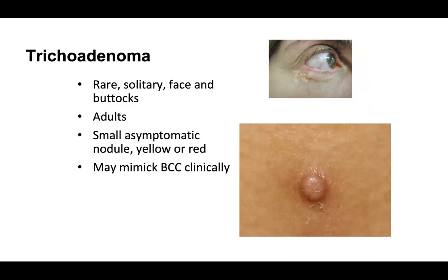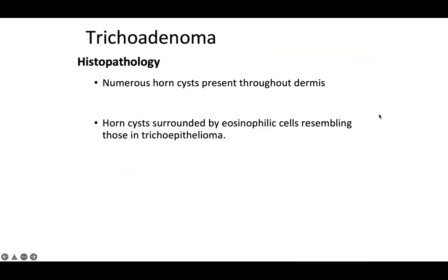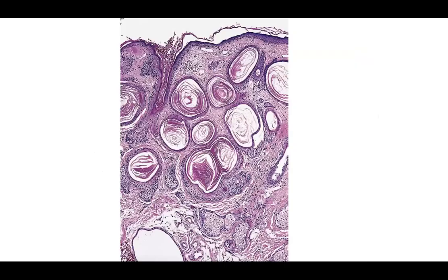Trichoadenoma is also a rare neoplasm — solitary, on the face and buttocks of adults with small asymptomatic yellow or red nodules that may mimic BCC clinically. On histopathology, you're going to find numerous horn cysts present throughout the dermis. Some people have likened this to owl eyes. The horn cysts are surrounded by eosinophilic cells resembling those of a trichoepithelioma — lots of small milia-like cysts throughout the neoplasm.